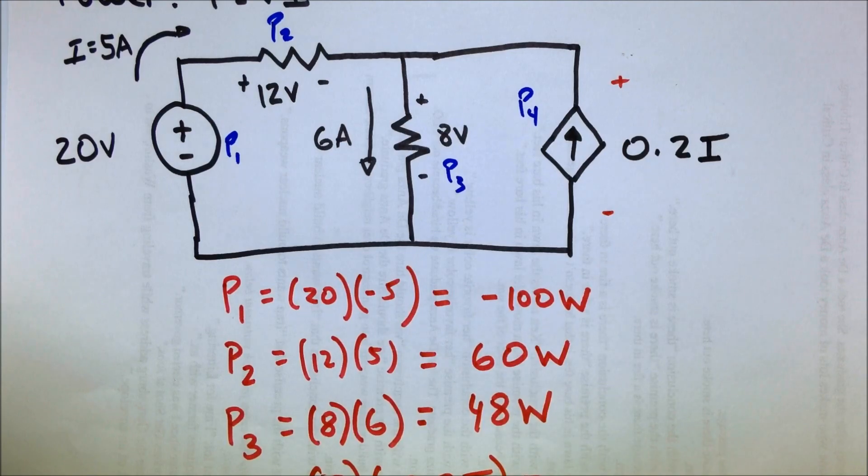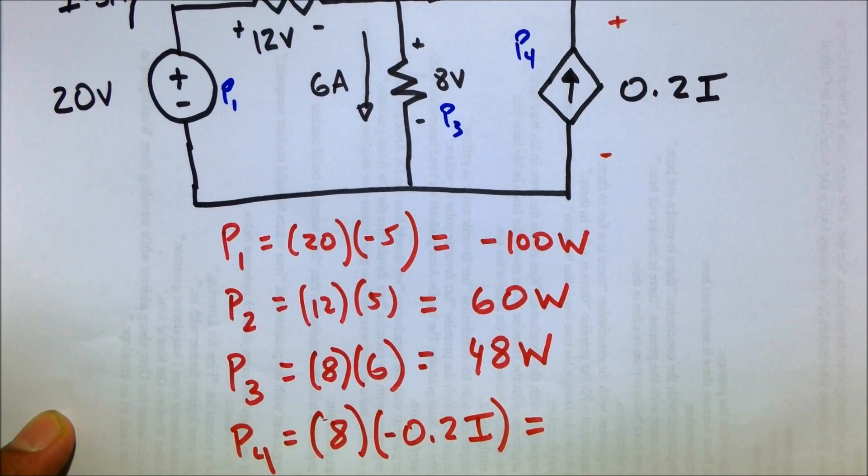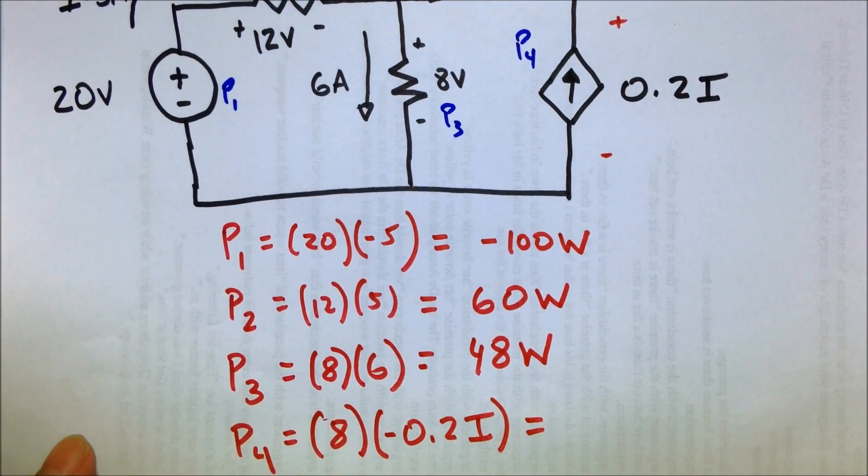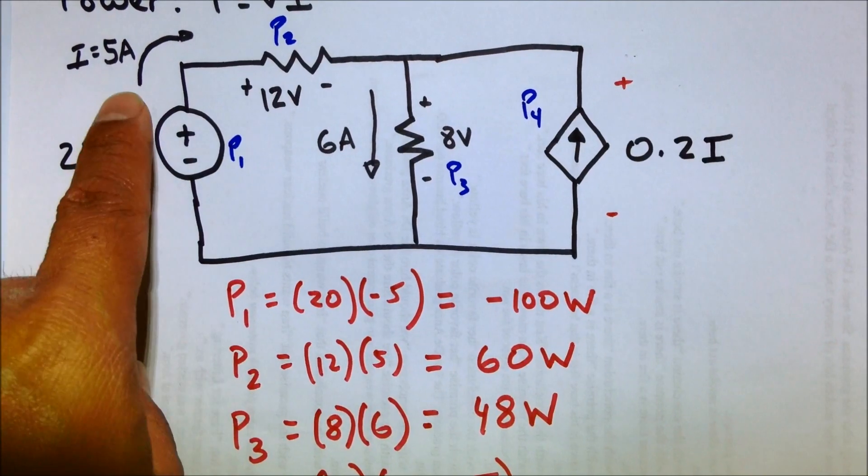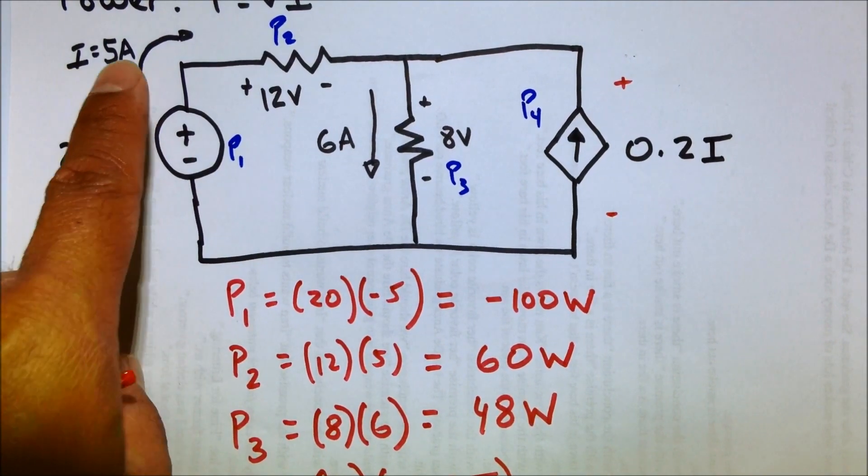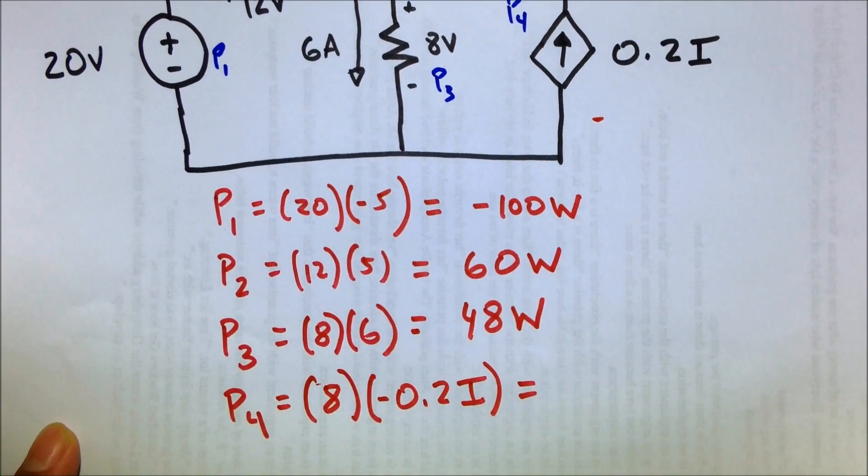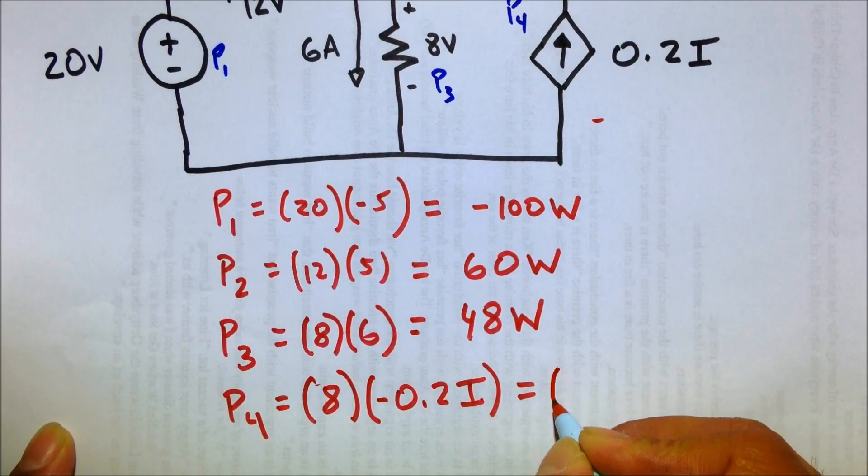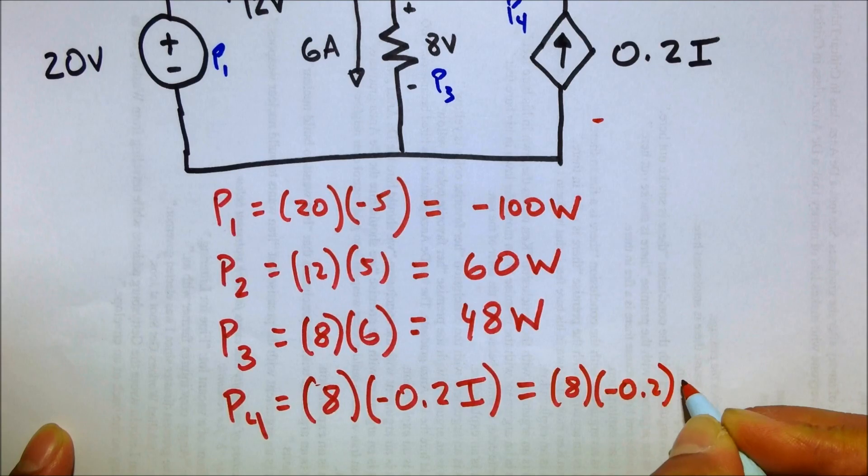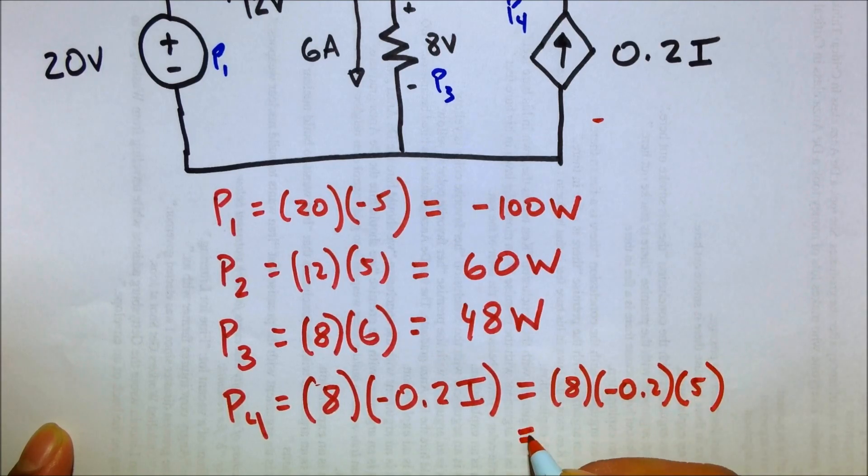And we know i. Oops, you can't see that, can you? We know i. i is our original 5 amps right up there. i equals 5 amps. So we put our 5 in place of the i. So 8 times negative 0.2 times 5. That gives us minus 8 watts.